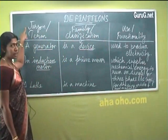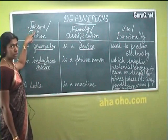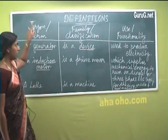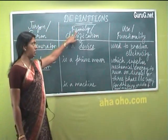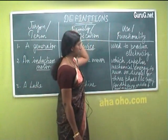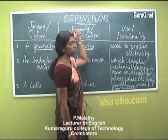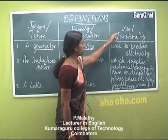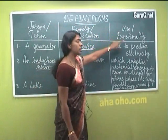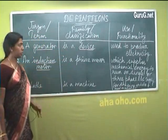First, you need to tell the name — the jargon, the term which you are going to define. Second, you have to tell the classification or the family. Third, you have to tell the usage — the usage of that particular device, or the scientific concept, or whatever the term is. The usage or the functionality must be given. So these are the three parts of a definition.